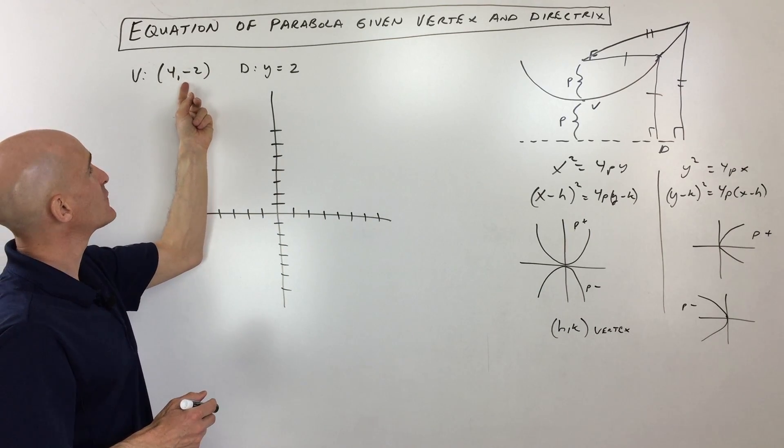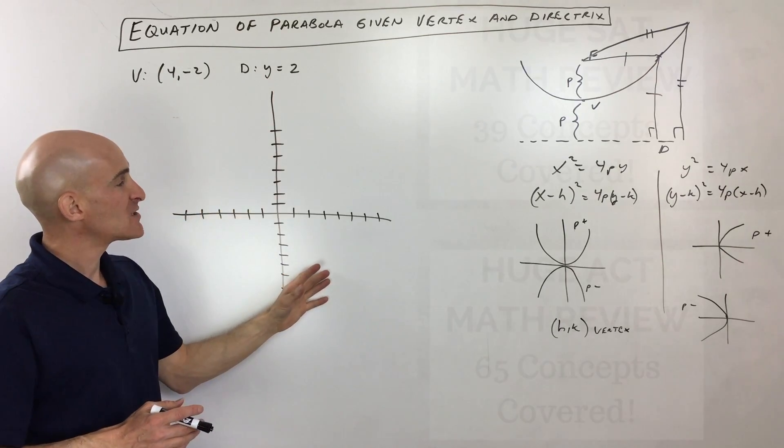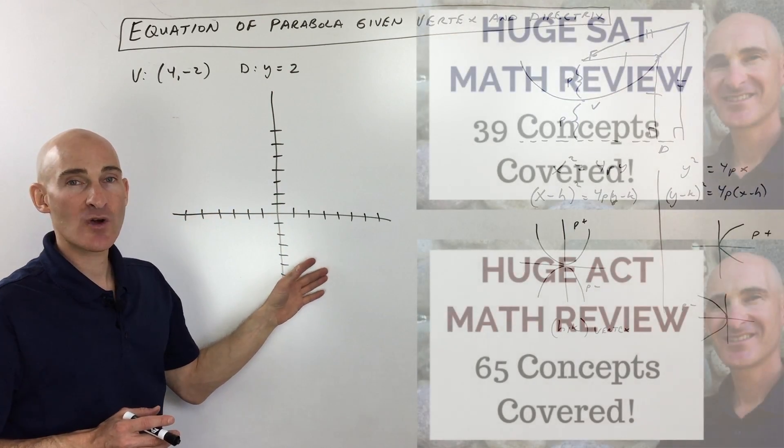Basically they're giving us the vertex is 4 negative 2, the directrix is y equals 2. But I wanted to mention before I get into this equation and graphing this parabola,